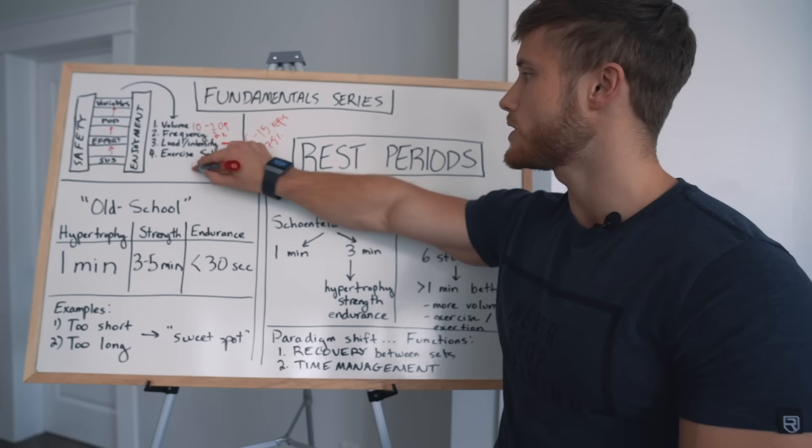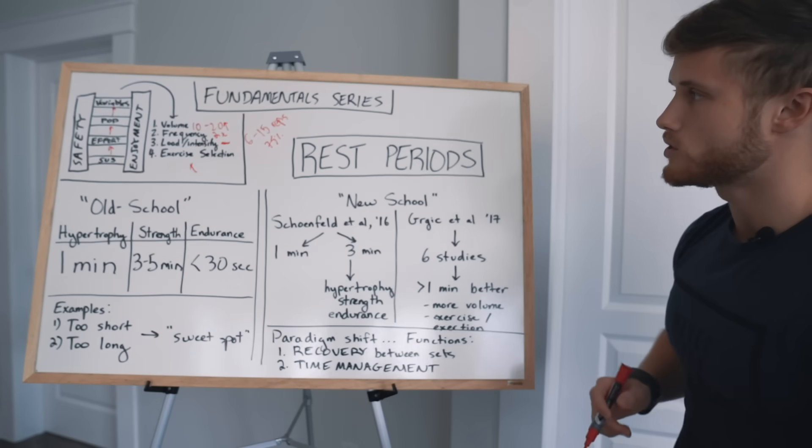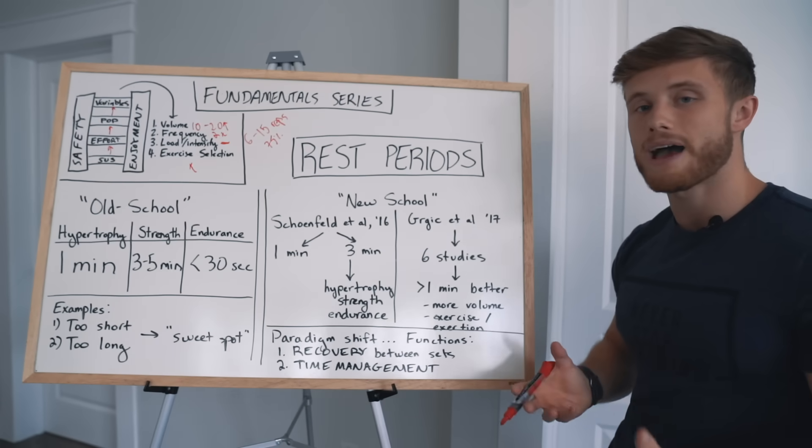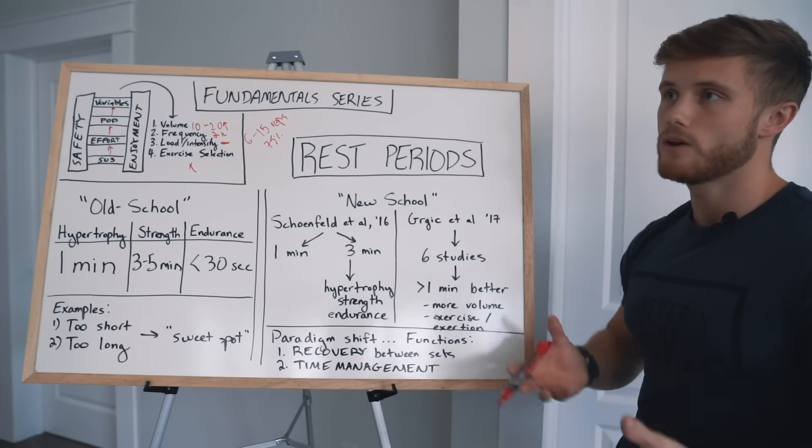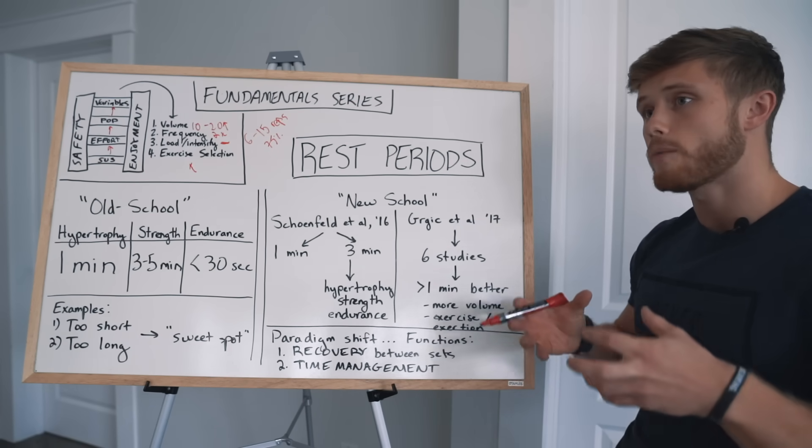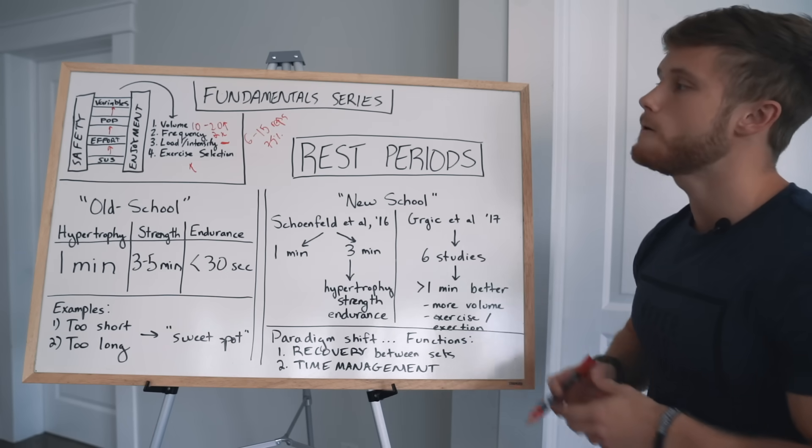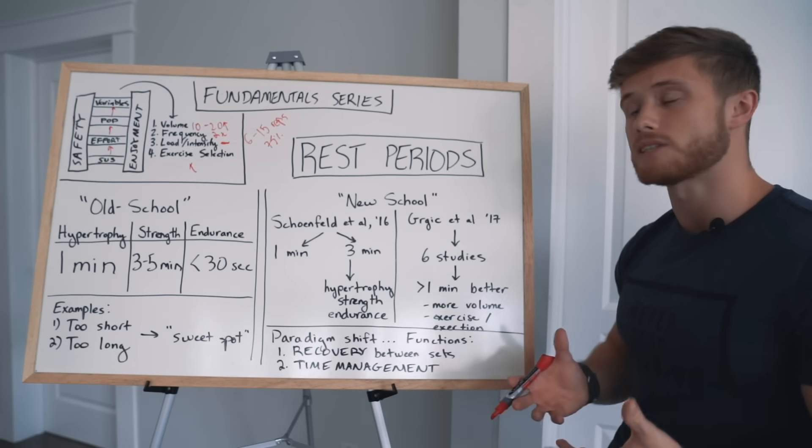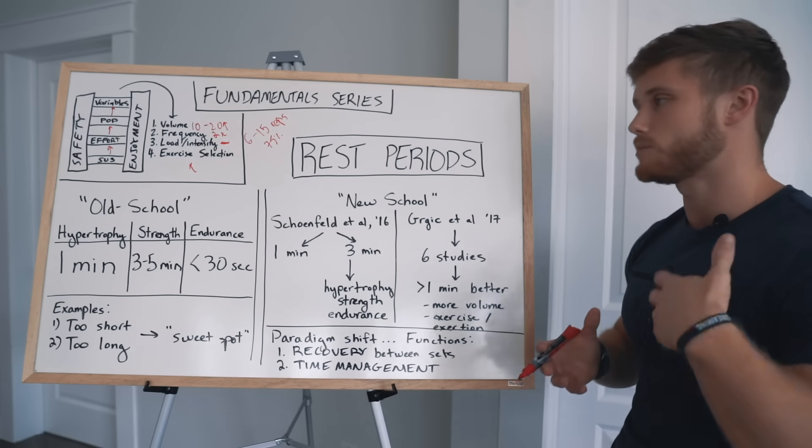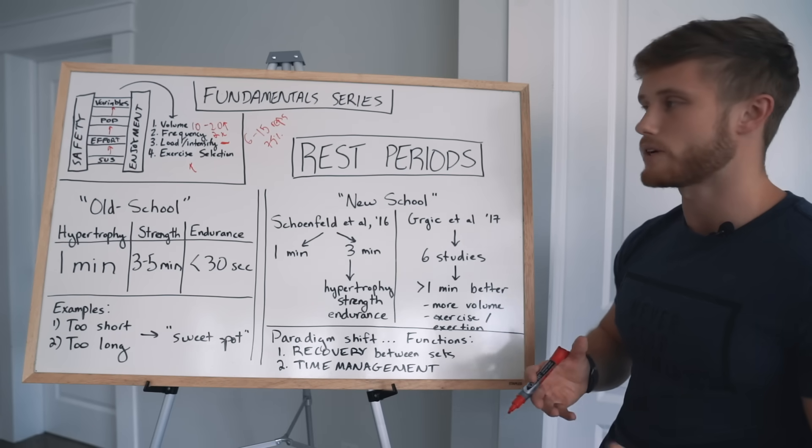And then when we talked about exercise selection, we talked about how it's important to prioritize compound multi-joint movements over isolation movements. So the compound stuff, squats, presses, deadlifts should form the core of your routine. And then you should use isolation exercises for some of the smaller assistance muscles, things like biceps, calves, hamstrings, et cetera.